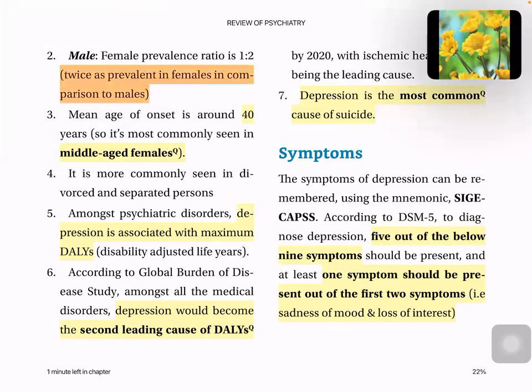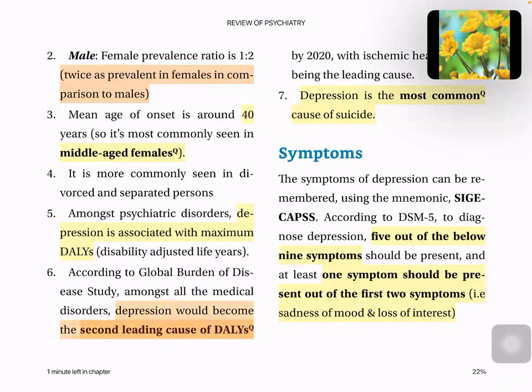The mean age is around 40. These days, geriatric depression is common — persons above 65 years are considered to have geriatric depression. Depression is common in middle-aged females, and is commonly seen in divorced and separated people, people who live alone. Among psychiatric disorders, depression is associated with maximum DALY — disability-adjusted life years. It is the second leading cause of DALY, and depression is the most common cause of suicide.